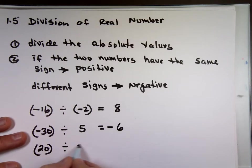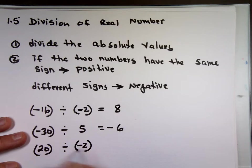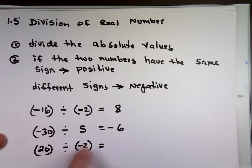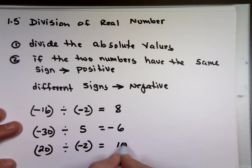20 divided by negative two. Divide the absolute values. 20 by two, which is what? Ten. Different signs or opposite? Different. The result is negative.